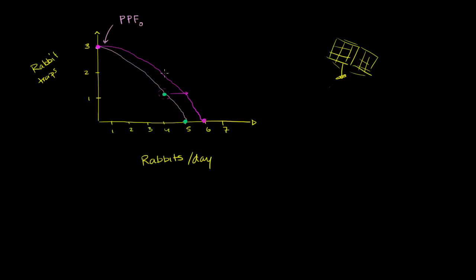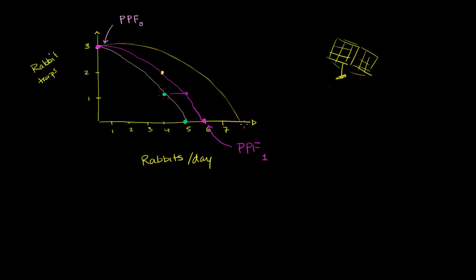So now he could stop making rabbit traps and catch six a day with just that one trap, or he could continue. Now he can catch five rabbits a day and still make one rabbit trap a day. Or he could choose to eat four rabbits a day and make two rabbit traps every day. After another period, he gets even more productive. This is the production possibilities frontier after one day. Then after two days — let's say he chose that scenario — he's now produced two more rabbit traps, so he has three rabbit traps total after two days.